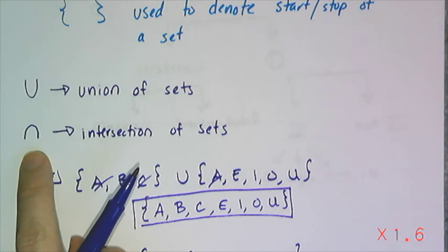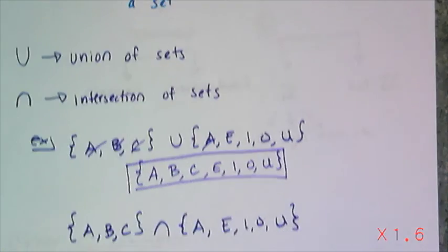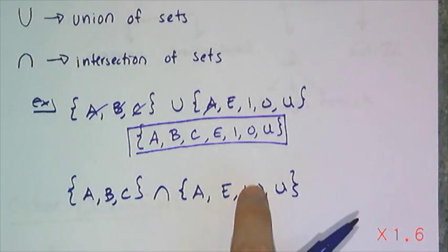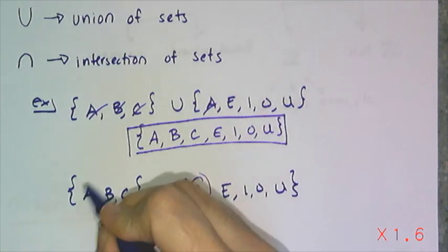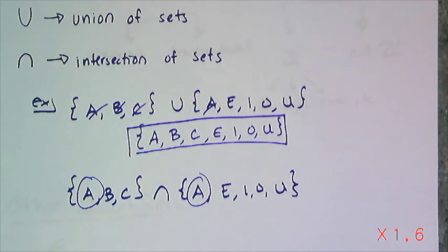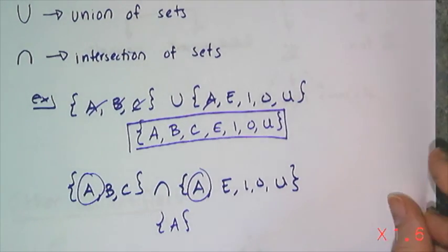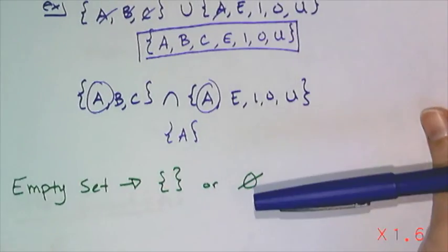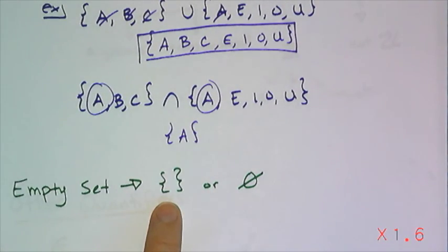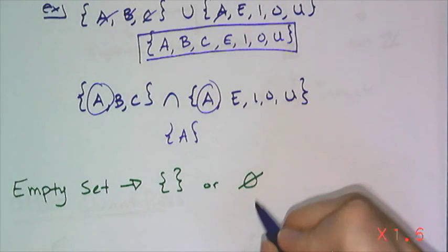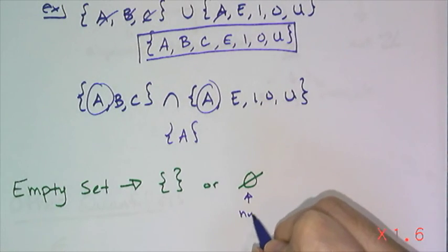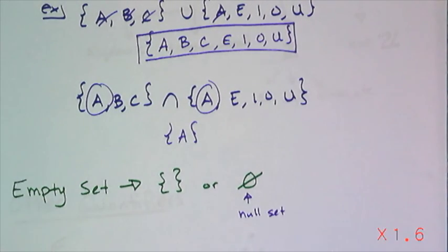Now this upside down U stands for intersection, and it means what the two sets have in common. So if I want to find the intersection of those two sets, it's what they have in common, that overlapping section of a Venn diagram, and the resultant set is just A. Now if those two sets have nothing in common, then we need an empty set, which we can either denote by an empty set of curly braces, or we can use this symbol here, which is the symbol for the null set or the empty set.